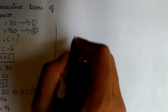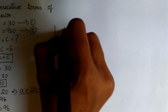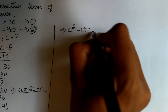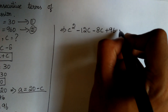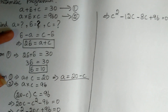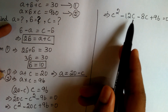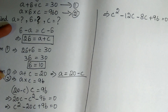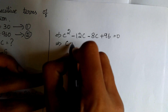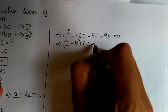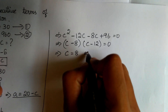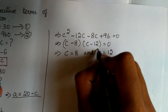Now solving that equation, we get C squared minus 12C minus 8C plus 96 equals 0. Here, minus 12 plus minus 8 equals minus 20, and minus 12 times minus 8 equals plus 96. This further simplifies as C minus 8 into C minus 12 equals 0. So we get two values: C equals 8 and C equals 12.